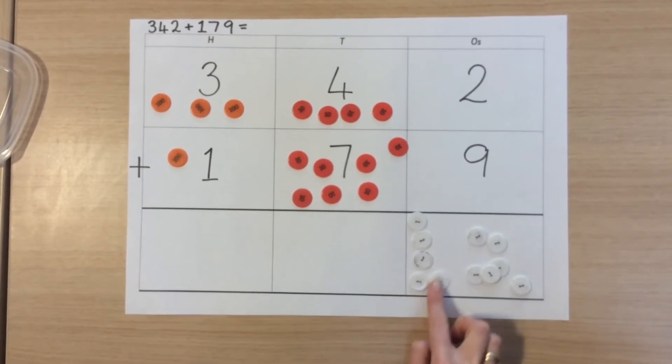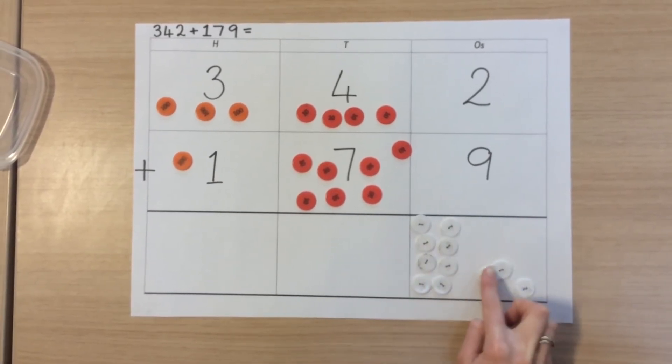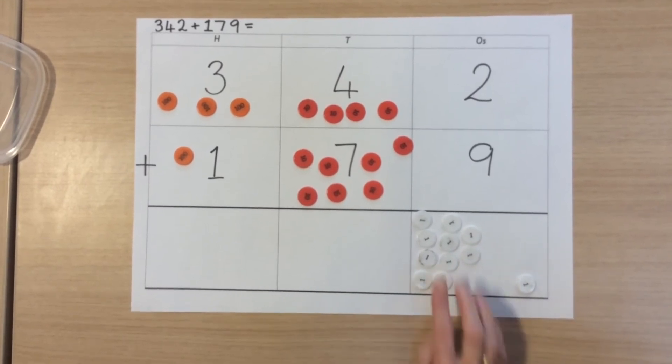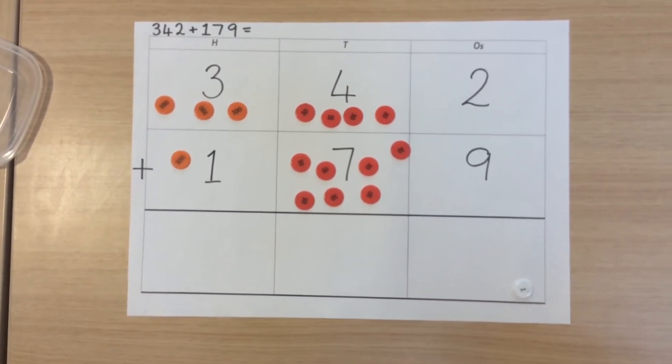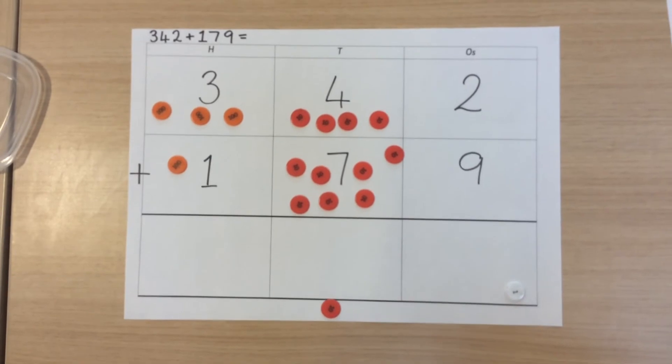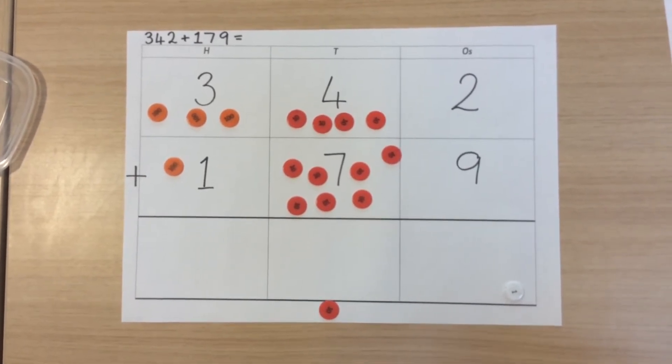If we have more than nine, we group them into groups of ten. Then we exchange any whole groups for ten, in this case ten ones for one ten. We put the exchange at the bottom of our next column, in this case the tens column.